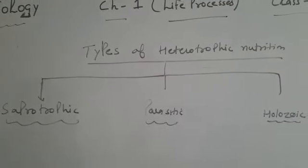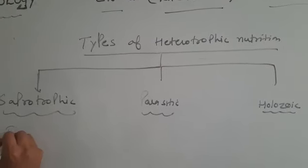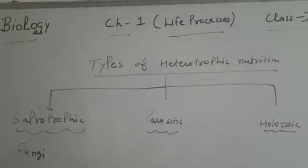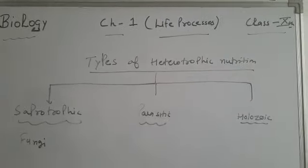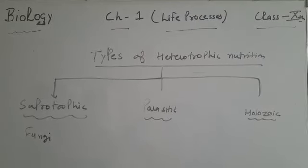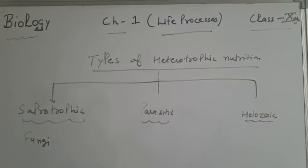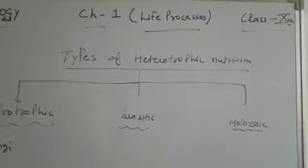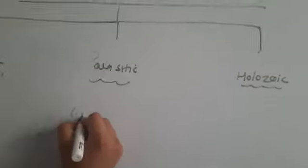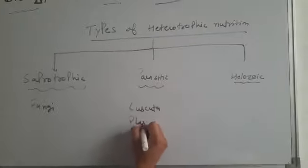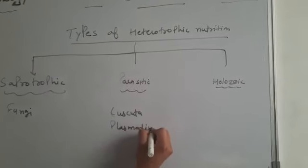The second is parasitic mode of nutrition. In parasitic mode of nutrition, the organism derives its food from the body of other living organisms without killing it. Examples of parasitic mode of nutrition are the Cuscuta plant, Plasmodium, and Protozoa.